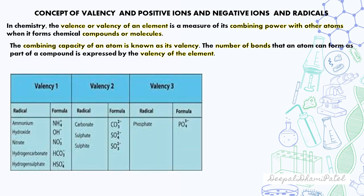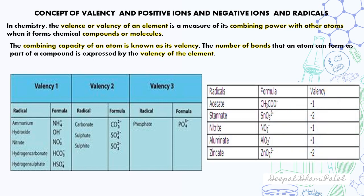Some valencies of few radicals are given in the following table. Ammonium NH4 plus, hydroxide OH minus, nitrate NO3 minus, hydrogen carbonate HCO3 minus, hydrogen sulfate HSO4 minus, carbonate CO3 minus 2, sulfite SO3 minus 2, sulfate SO4 minus 2, phosphate PO4 minus 3, acetate CH3COO minus 1, senate SNO3 minus 2, nitrite NO2 minus 1, aluminate ALO2 minus 1, zincate ZNO2 minus 2.